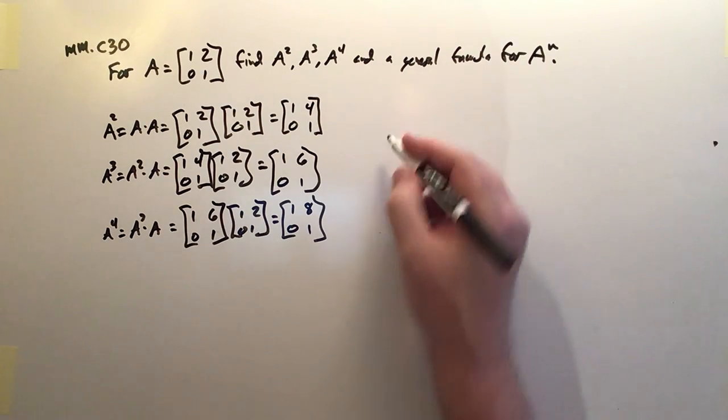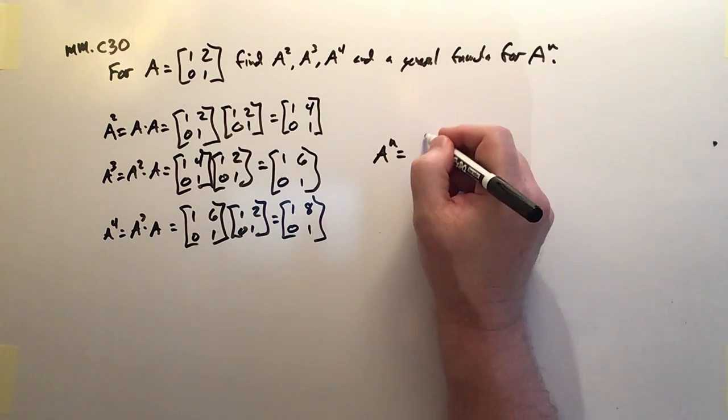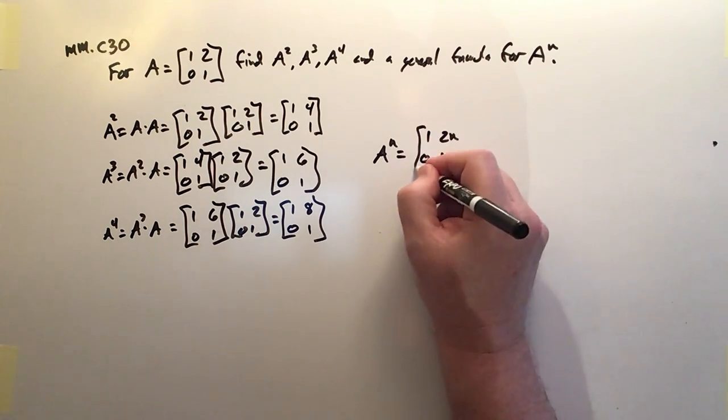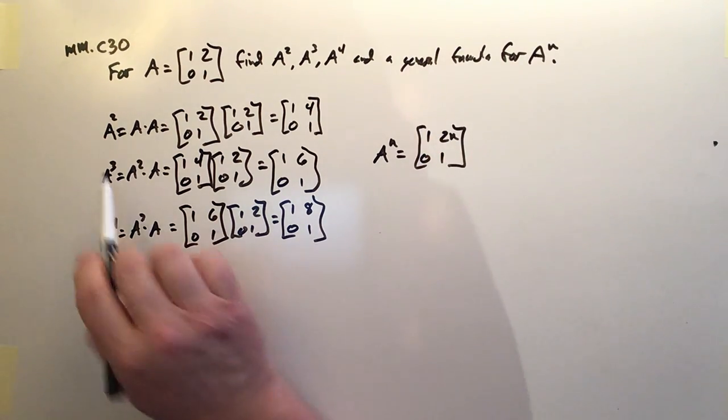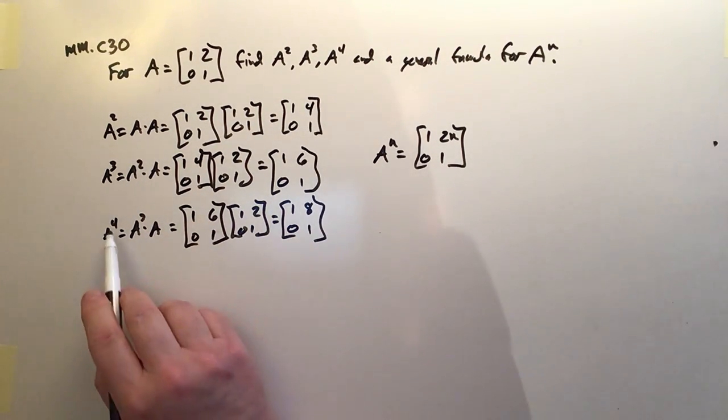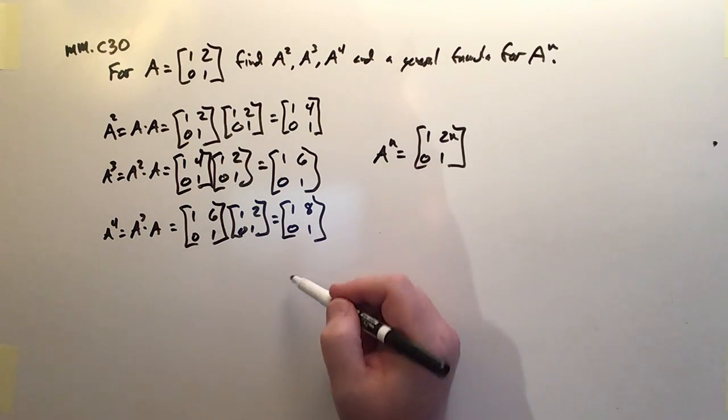It's looking like A to the N is going to be equal to 1, 2N, 0, 1. And I think that produces all of these. When N is 2, that's 4. When N is 3, that's 6. When N is 4, that's 8. It looks like it holds.